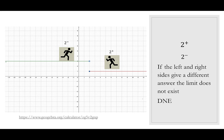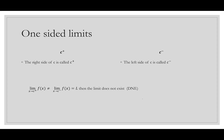Let's talk about one-sided limits. We use c-plus to denote the right side — because positive numbers are on the right — and c-minus for the left side. When the limit as x approaches c from the positive side equals the limit as x approaches c from the negative side and both equal L, then the limit exists and equals L. When those two one-sided limits are not equal, the limit does not exist, and we write DNE.